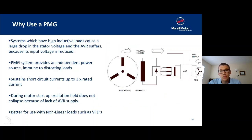So why would we use a PMG? A PMG is used when a system has high inductive loads that cause large drops in the stator voltage. This makes the AVR suffer because its input voltage is reduced. So the PMG system in this scenario provides an independent power source which is immune to these distorting loads. It helps to sustain short circuit currents up to two times, up to three times the rated current. And during motor starting, the excitation field does not collapse due to the lack of AVR supply. So it helps you start larger motors. It's also better for use with non-linear loads such as VFDs.